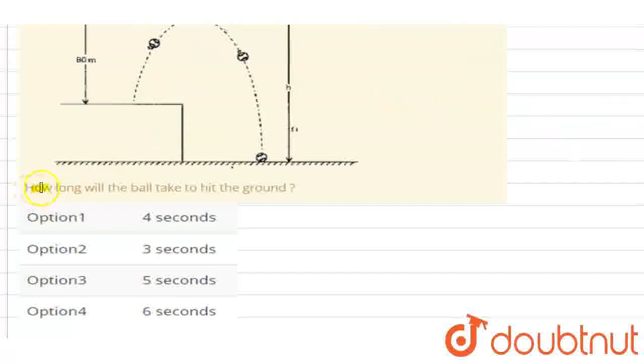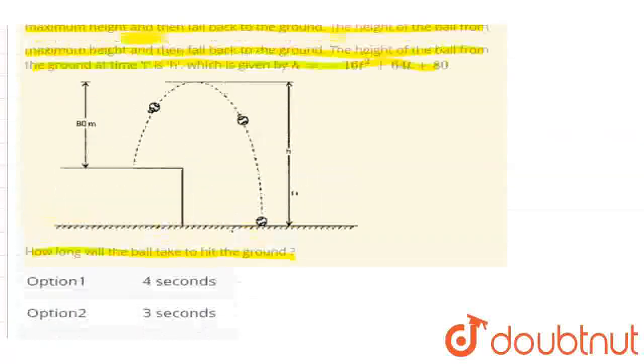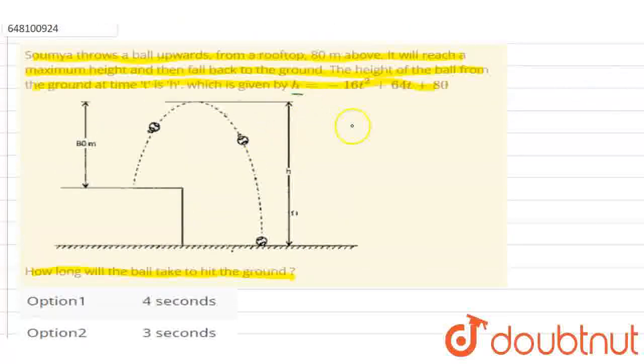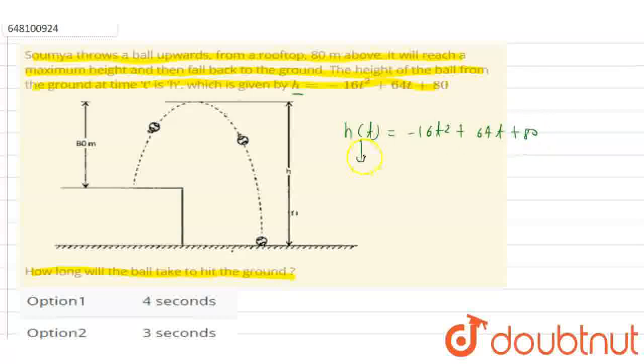Now, we have a problem where the ball's height is given by the equation h(t) equals minus 16t square plus 64t plus 80. We need to find how long will the ball take to hit the ground.